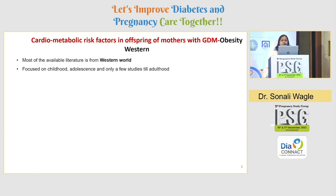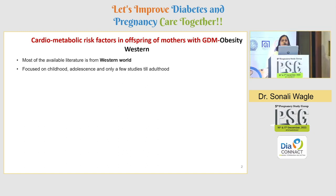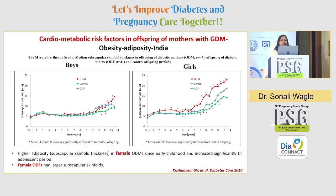We will discuss two major cardiometabolic risk factors: obesity/adiposity and glucose intolerance. Most available literature is from the Western world, focused on childhood and adolescence, with only a few studies extending to adulthood. The Pima Indian population has shown higher risk of obesity and diabetes in offspring of diabetic mothers. The only Indian data comes from the Mysore Parthenon cohort, which showed higher adiposity — mainly subscapular skinfold thickness — in female offspring of diabetic mothers (ODMs) from early childhood through adolescence, with female offspring of diabetic fathers also showing higher subscapular skinfolds.